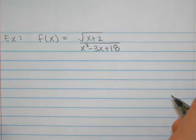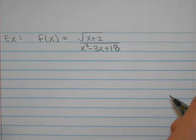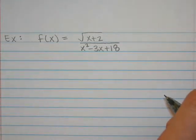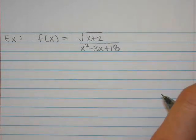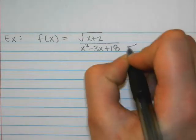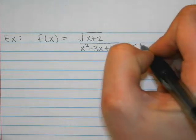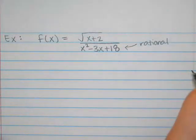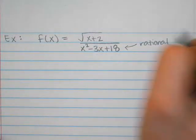Does that feel difficult enough or do we want to complicate it some more? Okay. So what are the two types of functions that we recognize are going to limit our domain? Remember the three options are rational, radical, and logarithmic. So I see rational, right? Because I have a fraction. And so the bottom of the fraction is what I'm concerned about. In rational functions, the bottom of the fraction cannot equal zero.